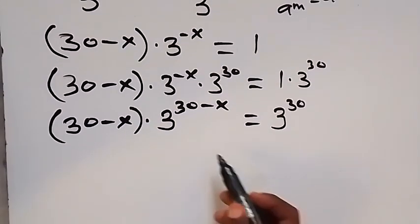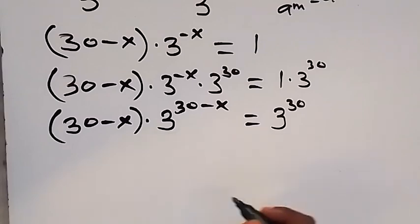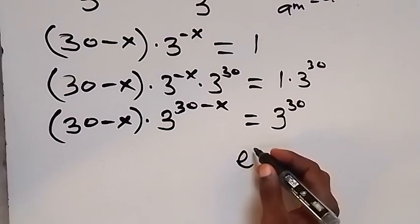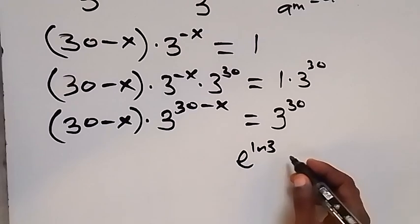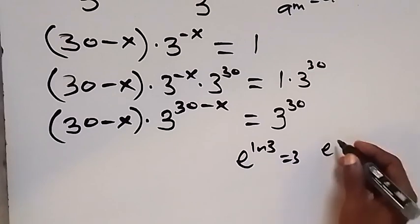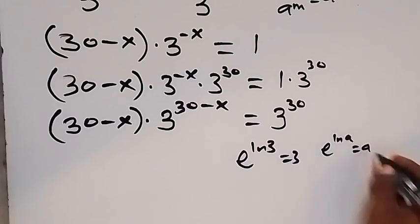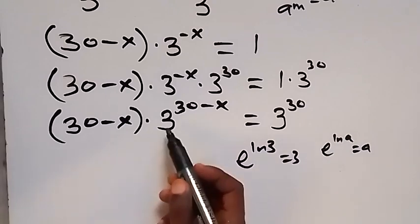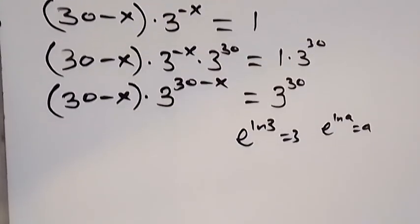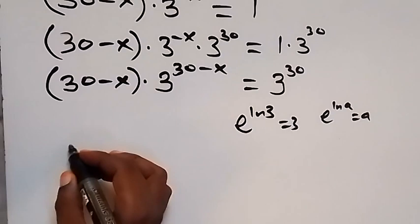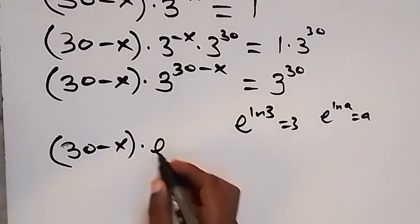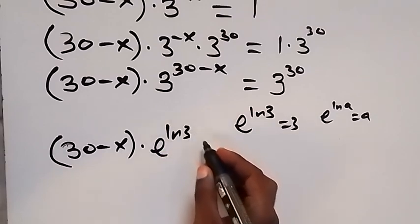We can write 3 in another way: 3 can be expressed as e raised to power ln 3, since e raised to power ln a equals a. So instead of writing 3 here we can introduce e raised to power ln 3. This equation becomes 30 minus x, multiplied by e raised to power ln 3.